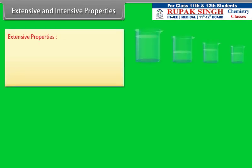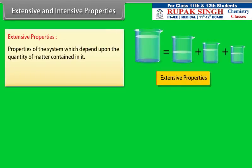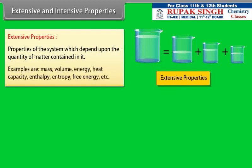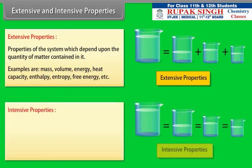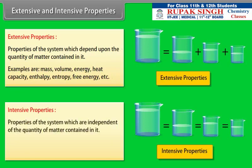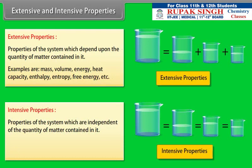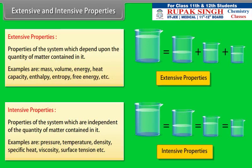Extensive properties are properties of the system which depend upon the quantity of matter contained in it. Examples include mass, volume, energy, heat capacity, enthalpy, entropy, and free energy. Intensive properties are properties of the system which are independent of the quantity of matter contained in it. Examples include pressure, temperature, density, specific heat, viscosity, and surface tension.